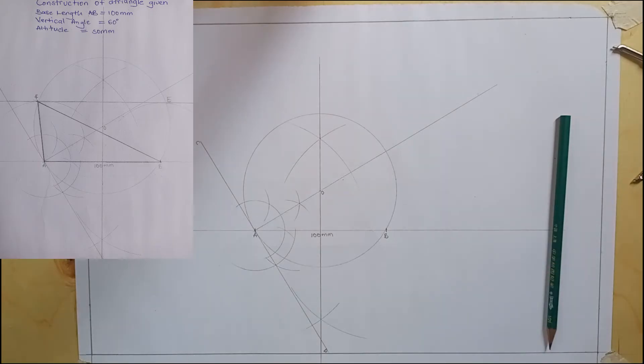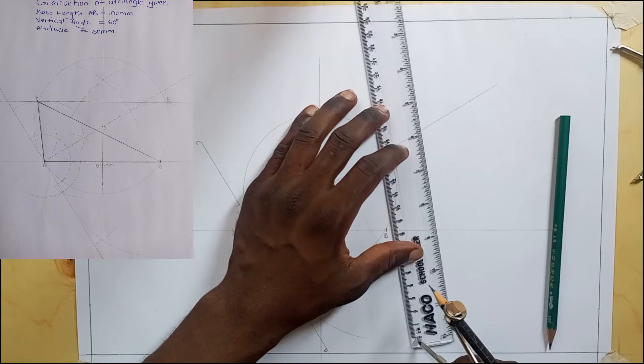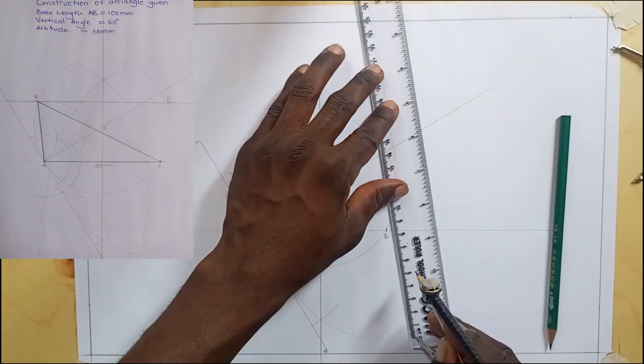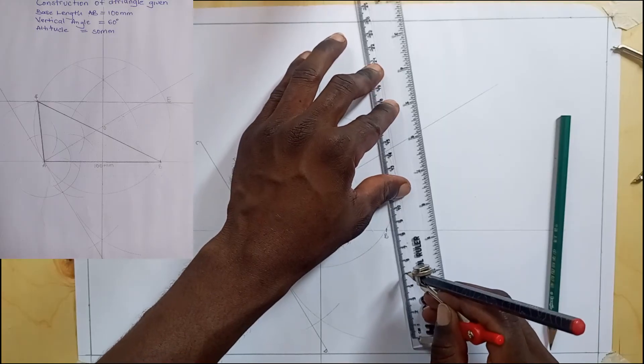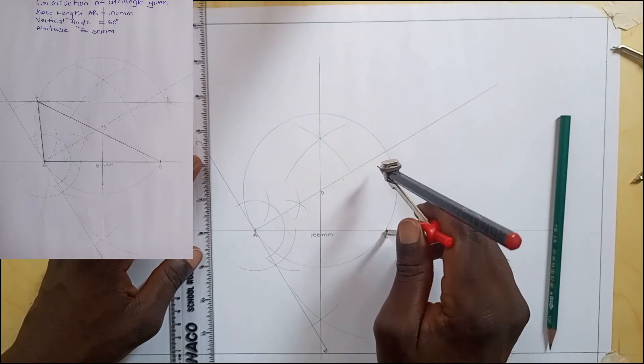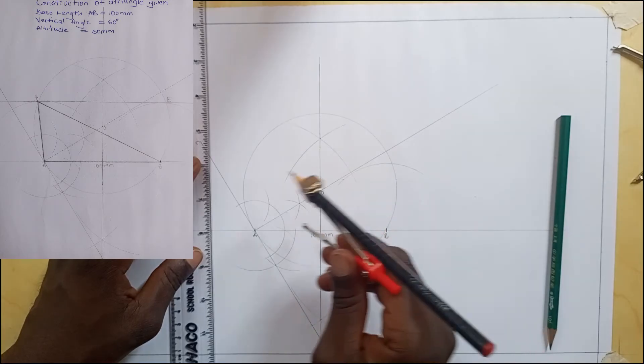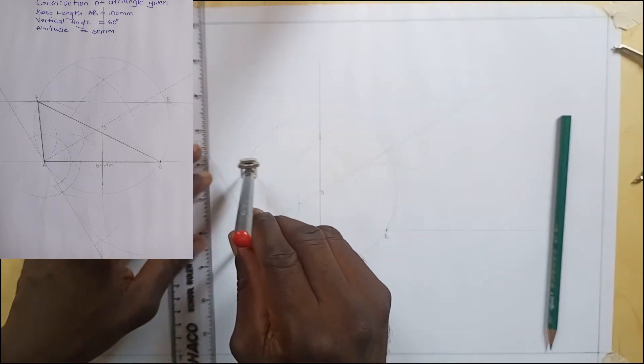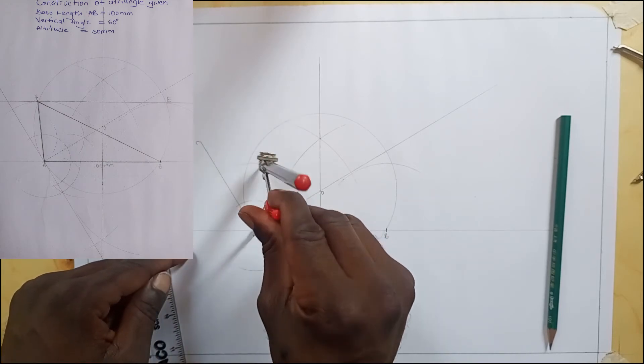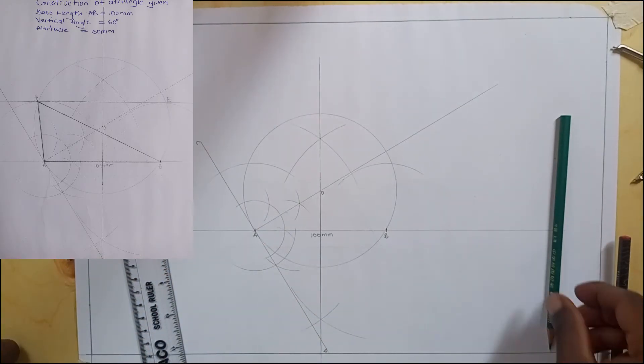When you're done with drawing the circle, remember that our altitude is 50 millimeters. I'll measure off my 50 millimeters from my ruler, which is 5 centimeters. I come at point B and strike that arc, then I do the same thing at point A.